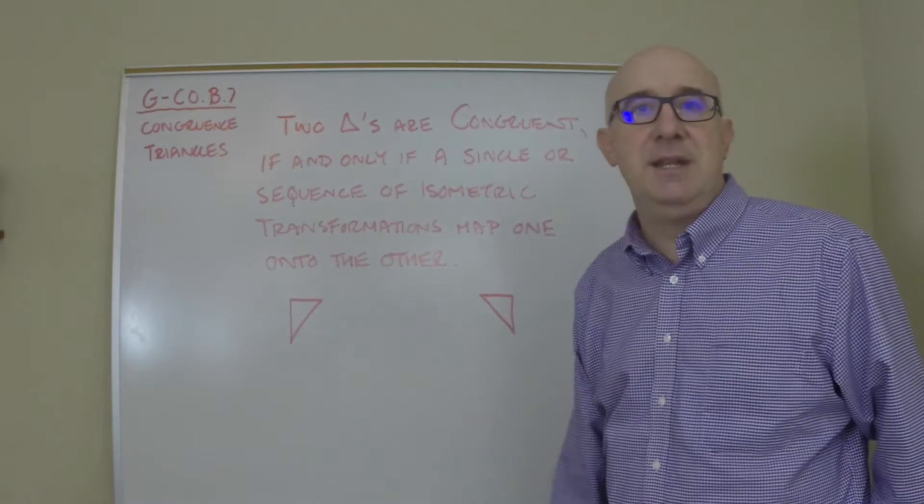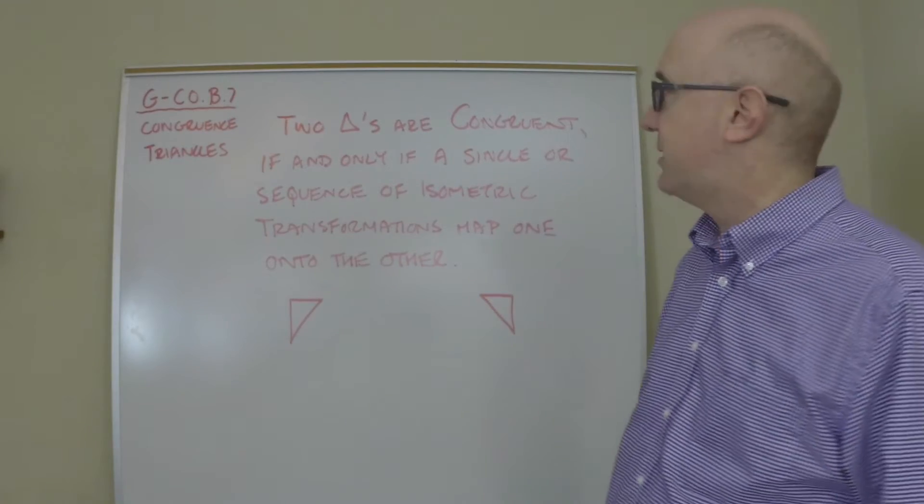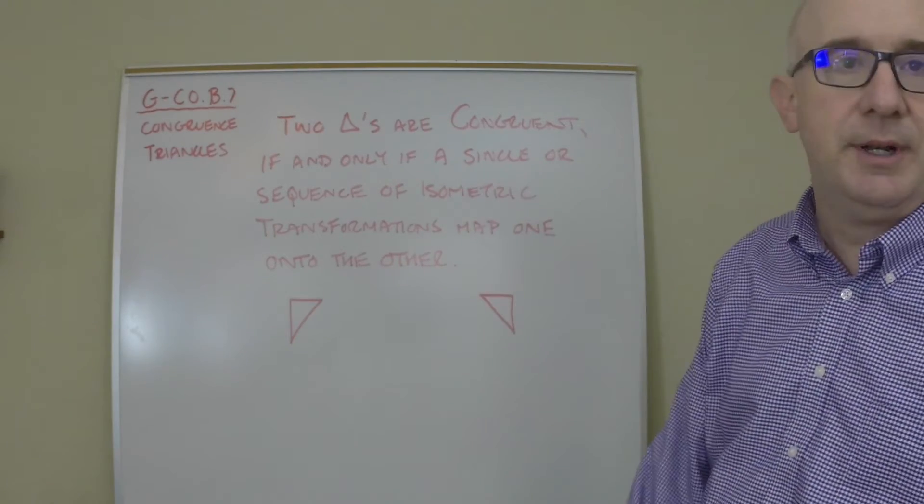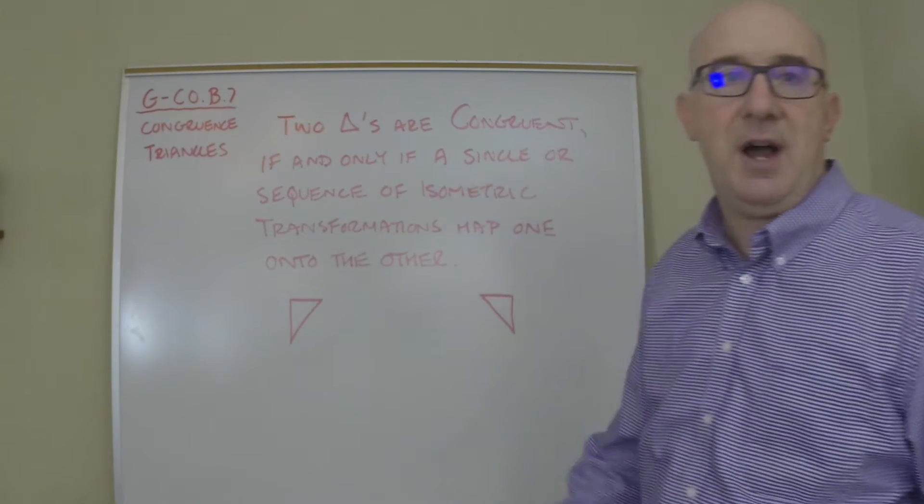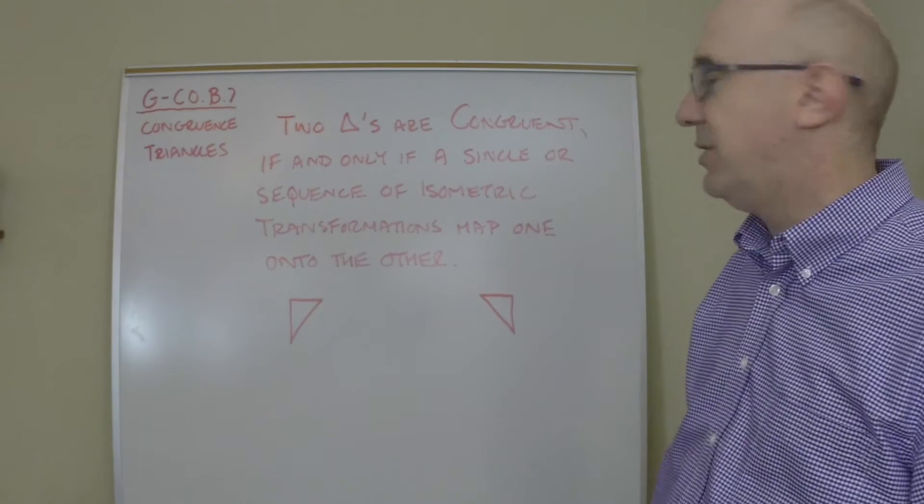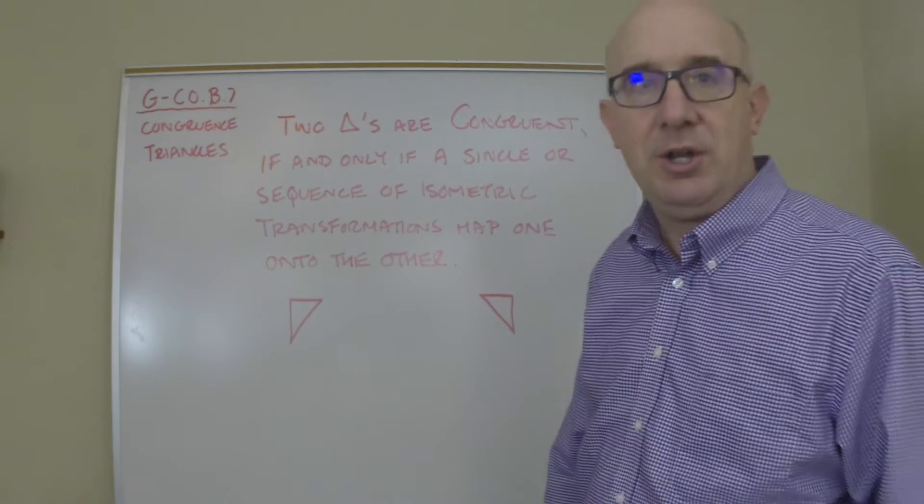I wrote down the definition of what it means to have congruent triangles. It says two triangles are congruent if and only if a single or sequence of isometric transformations map one onto the other.